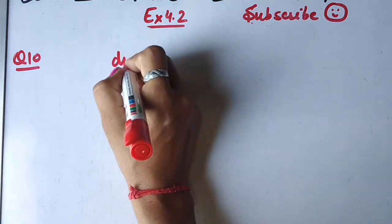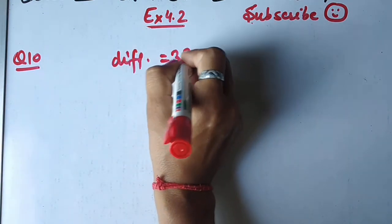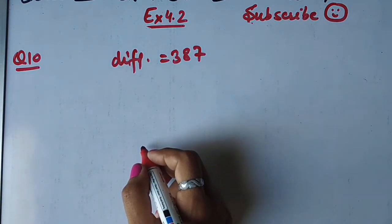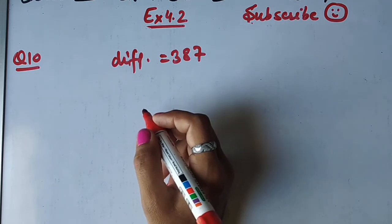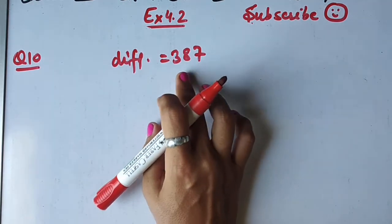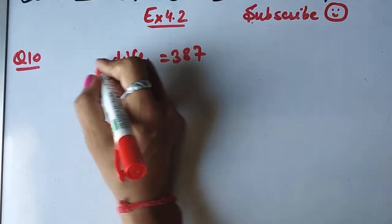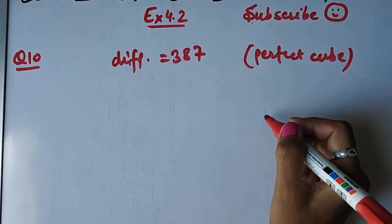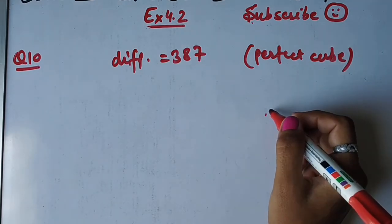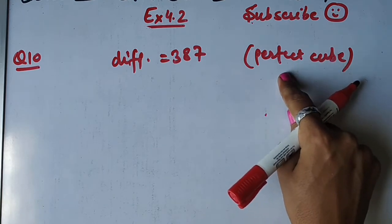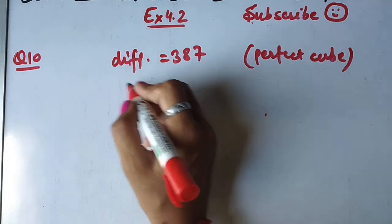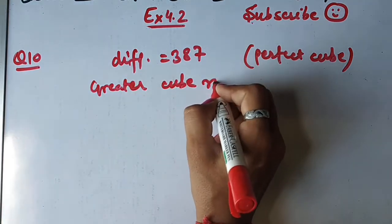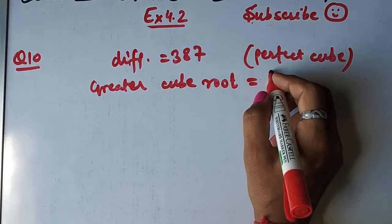Ab question 10. Pehle difference likhti hoon — short form mein. Difference kya given hai: 387. Phir isne kaha: if the cube root of the greater of the two numbers is 8. Do perfect cubes ka difference given hai. Greater wale number ka cube root kya diya hai — 8. Yahan likh deti hoon: greater cube root = 8.